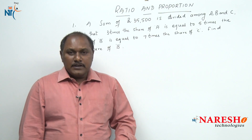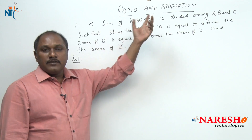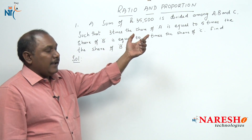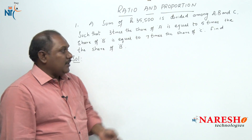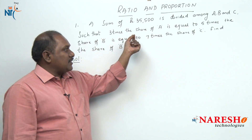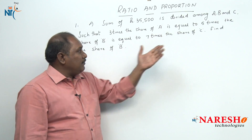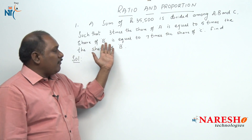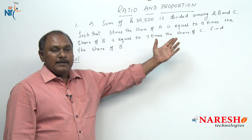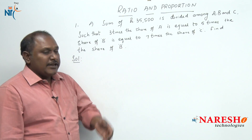The first example: a sum of rupees 35,500 is divided among A, B and C such that 3 times the share of A is equal to 5 times the share of B, which is equal to 7 times the share of C. Find the share of B.